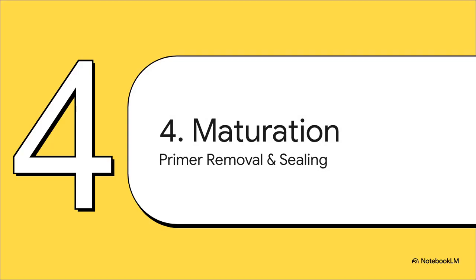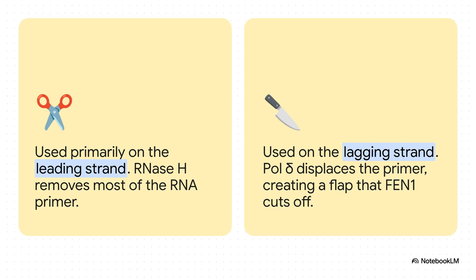Just because the strands are copied doesn't mean the job is done. The cell has to go back and do some clean-up — specifically, it needs to get rid of all those little RNA primers that polymerase alpha laid down and replace them with proper DNA. There are two different ways the cell does this. On the leading strand, it's mostly an enzyme called RNase H that comes in and removes the RNA. But on the lagging strand, it's a whole different process: as polymerase delta is building one Okazaki fragment, it runs into the primer of the previous one and pushes it aside, creating a little flap. Then an enzyme called FEN1, or flap endonuclease 1, comes in and snips that flap right off. In both cases, DNA ligase comes in at the end to seal the deal.